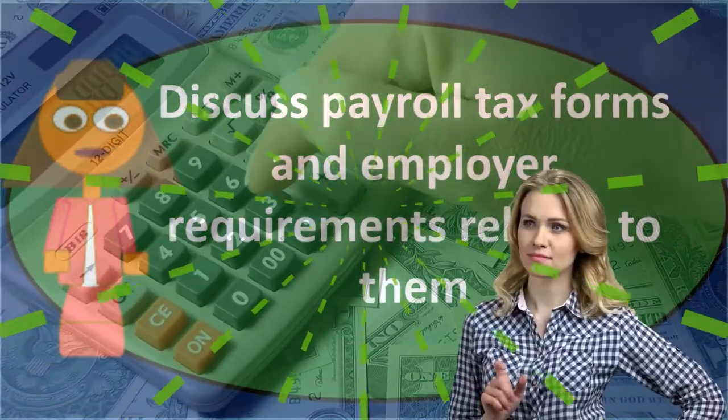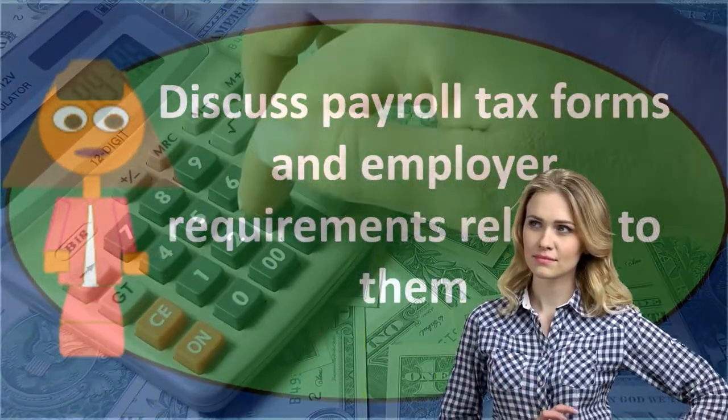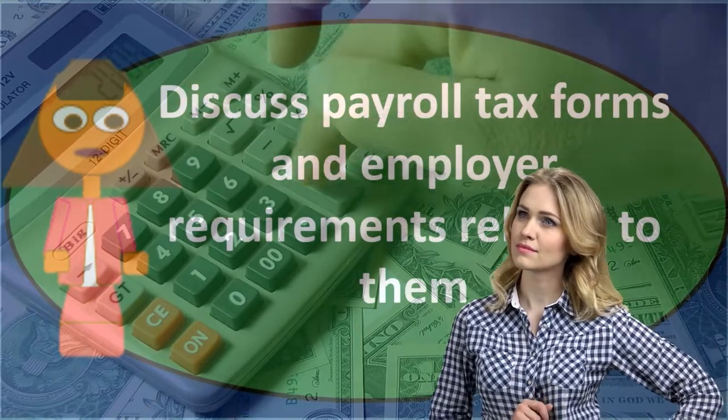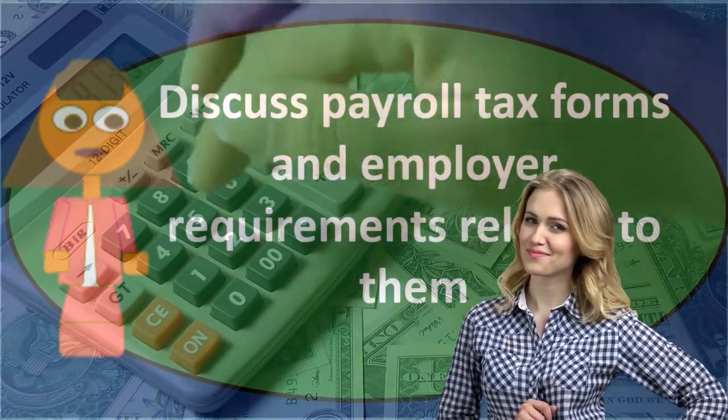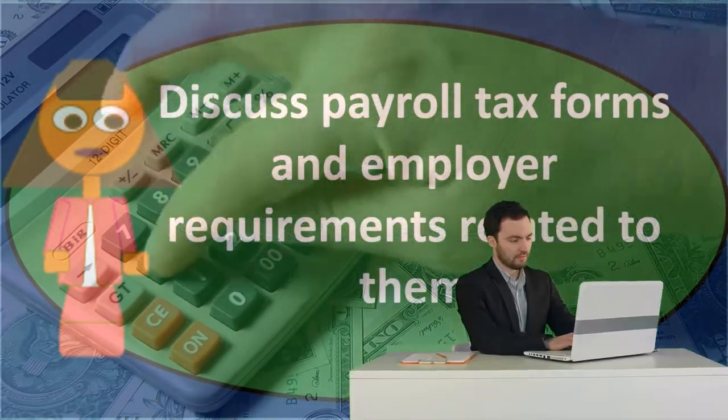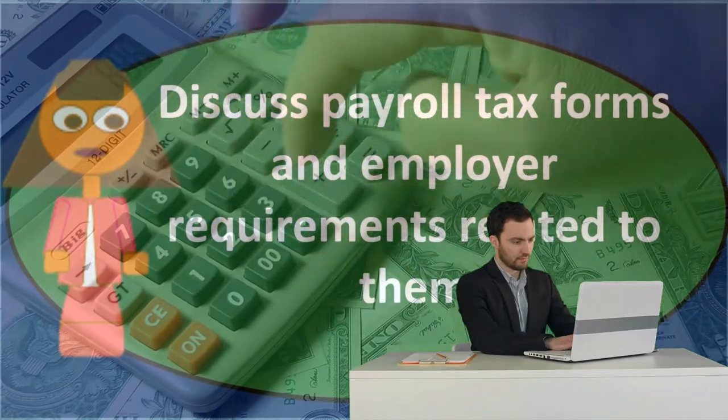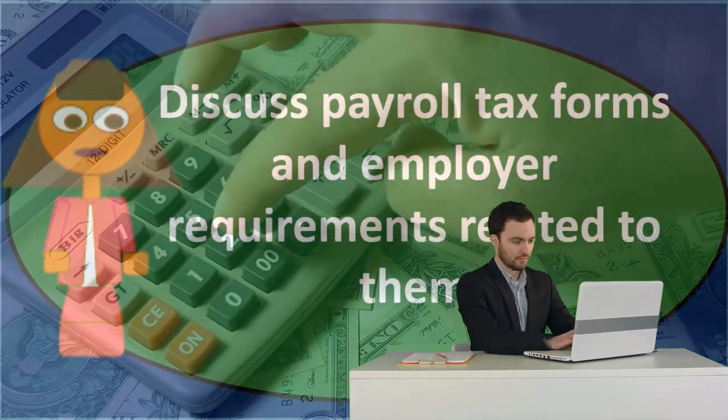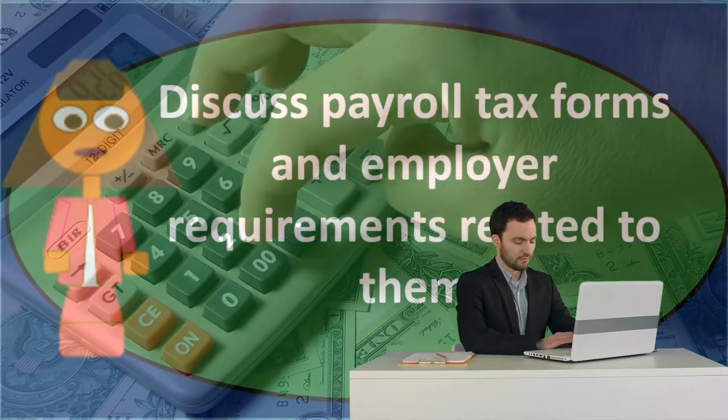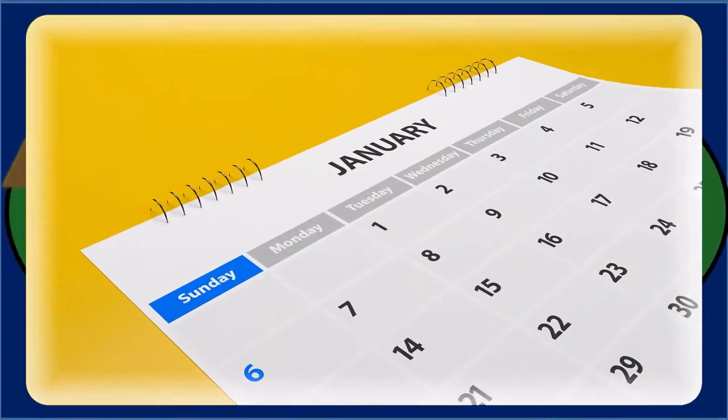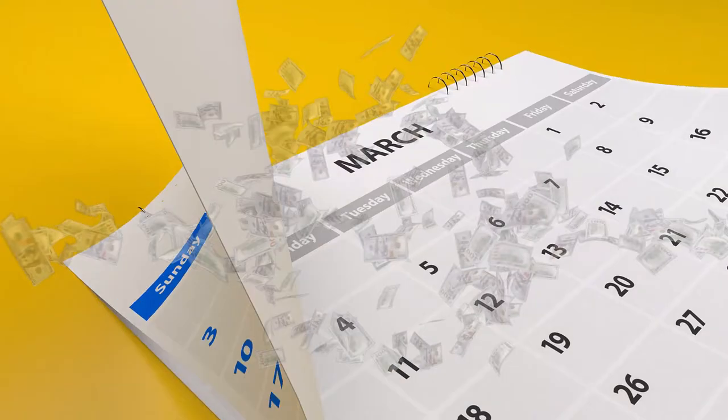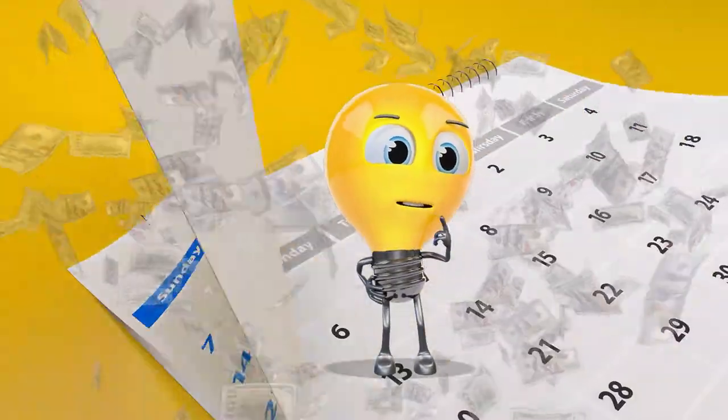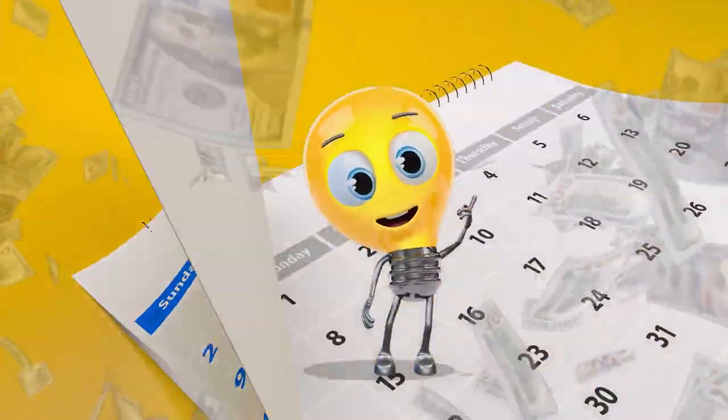Then we're going to have the quarterly forms, which are the 941 forms. So they're going to need to be reported each quarter. So remember that each quarter is only three months. Sometimes I used to think quarters just remind me of four, but remember that we're talking 12 months divided by a quarter. Four gives us three months. So they're going to be due for every three months, the quarterly 941 forms.